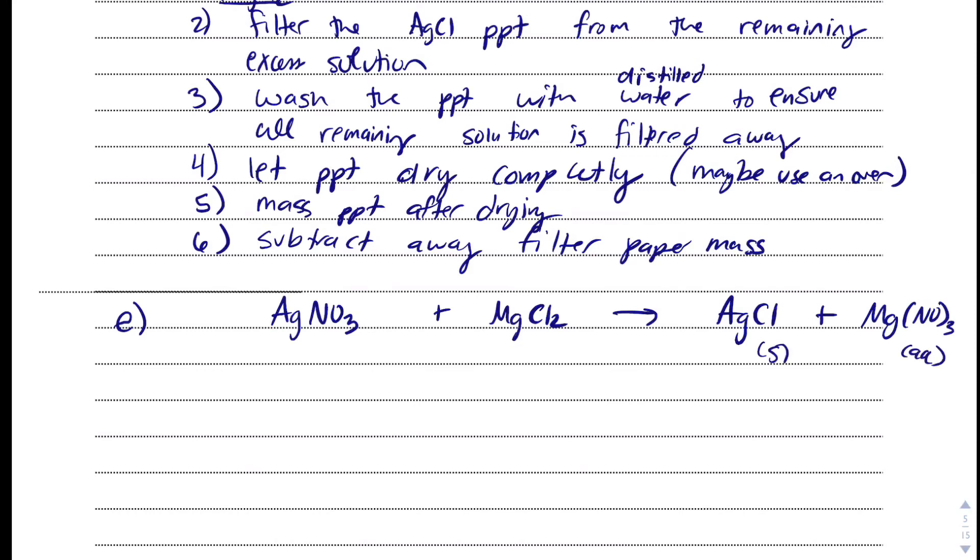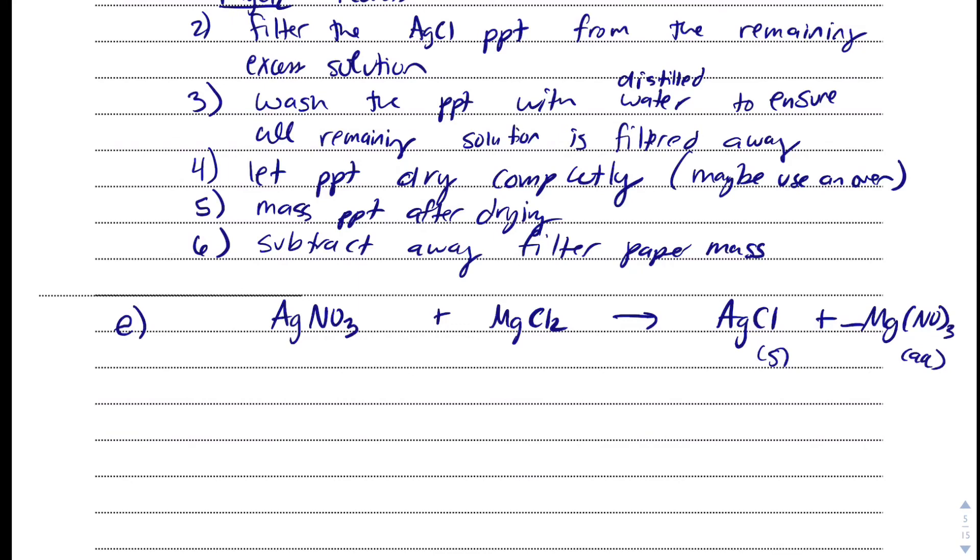All nitrates are aqueous. And I wrote nitrate wrong here. It's NO3. And we have two of them. Magnesium chloride will be aqueous and silver nitrate will be aqueous. And then, to get this balanced, I'll put a two there and a two there. What they asked is, they asked for the moles of magnesium chloride. They gave us 5.48 grams of silver chloride. So, we just need to mole bridge to the magnesium chloride. So, that's not going to be so bad.